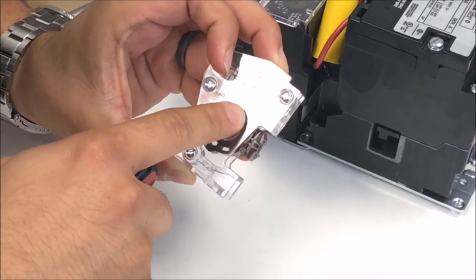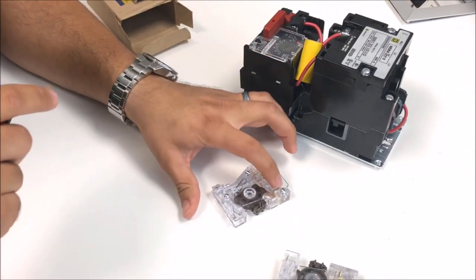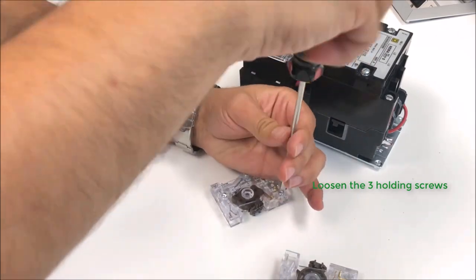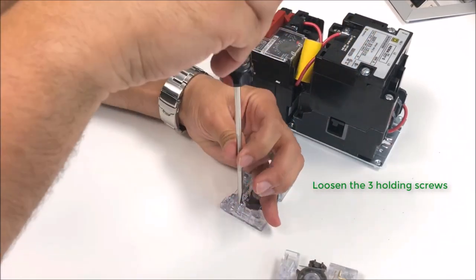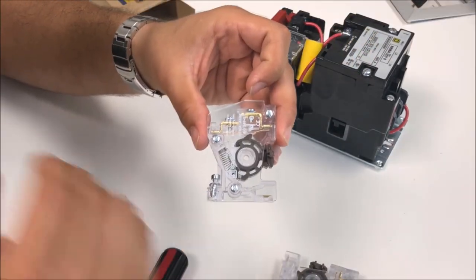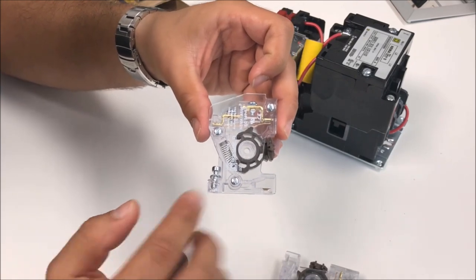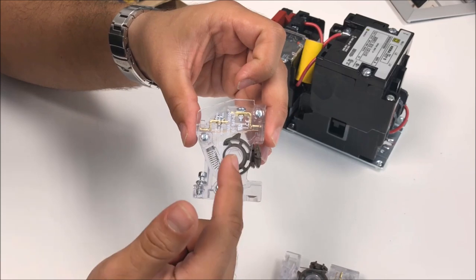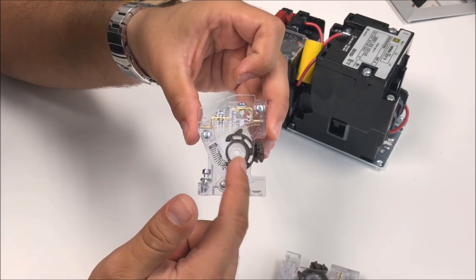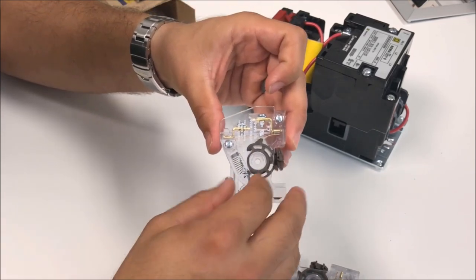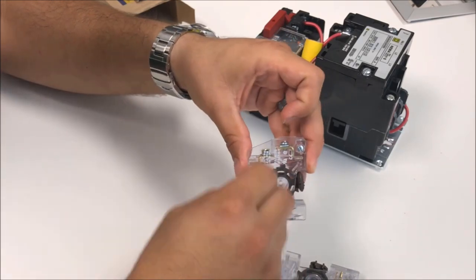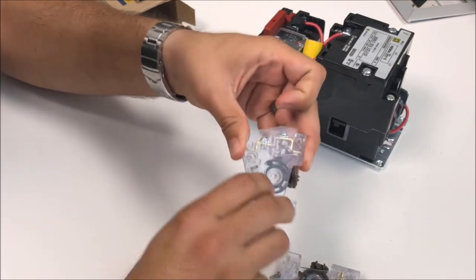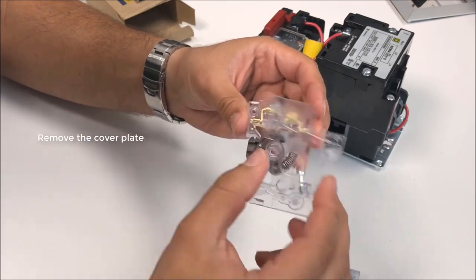We're going to convert this to a normally open. First you're going to remove the three screws holding the cover plate. Now that the screws have been loosened, we can remove the cover plate that's on the opposite side, take that cover off, and we're going to reverse the location of this cam wheel. Take the screws out, make sure not to lose them because you'll need them to put it back together. Flip it over and there's a cover plate.